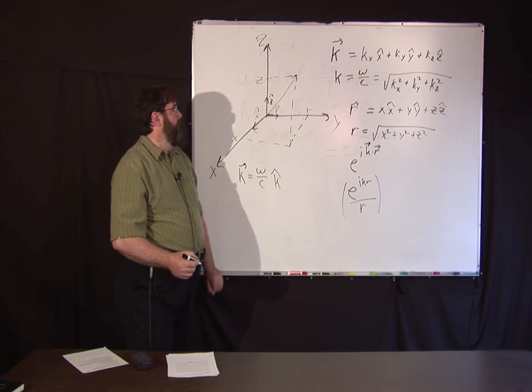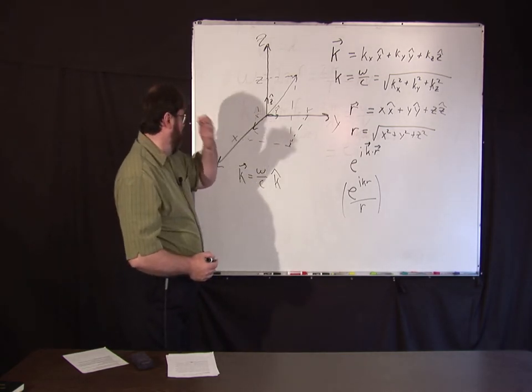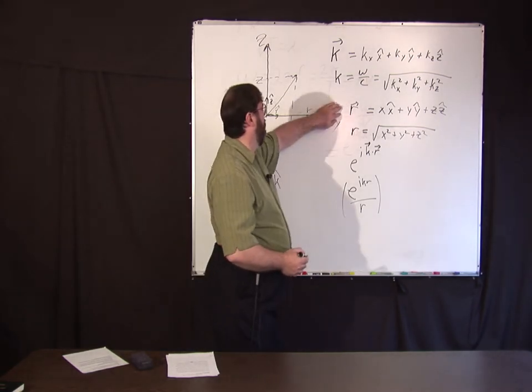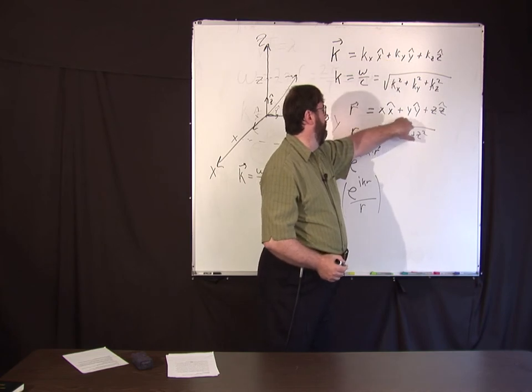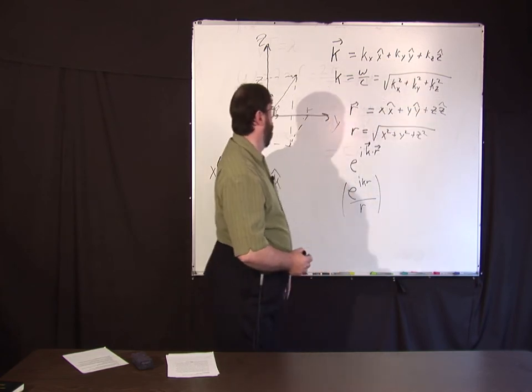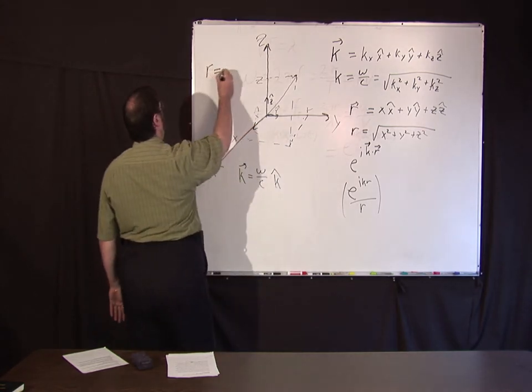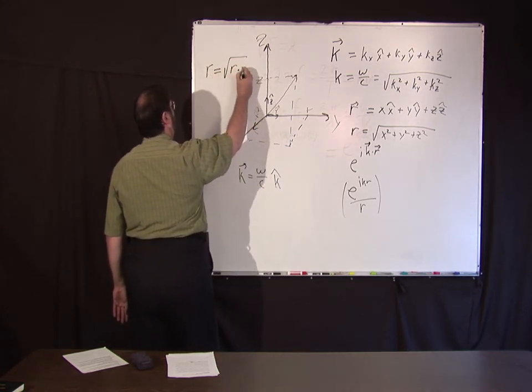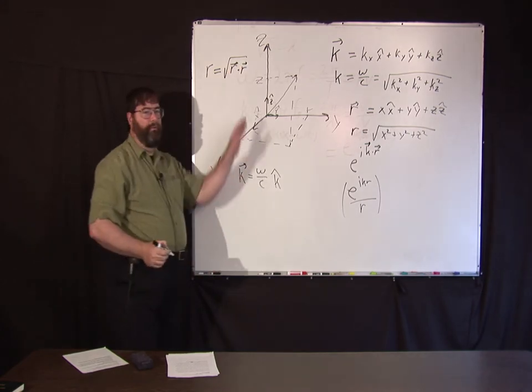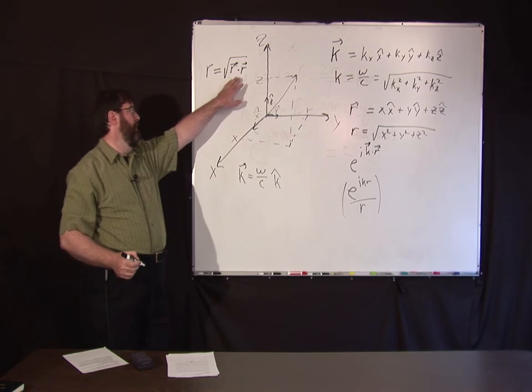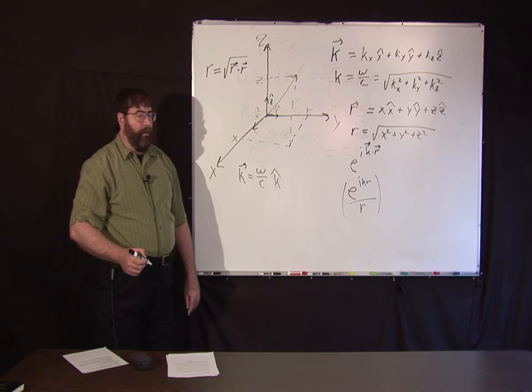One more thing I should define is the dot product. All you do when you have two vectors: the dot product is the first component times the second component plus the second component times the second component, etc. So the magnitude r can also be written as the square root of r dot r. Any vector's magnitude is the square of its dot product with itself. The dot product is just a projection of one vector onto another.